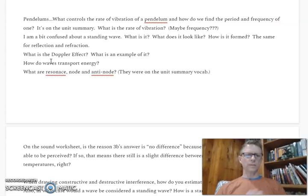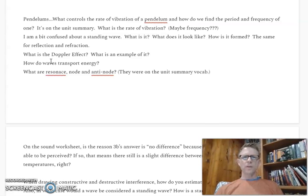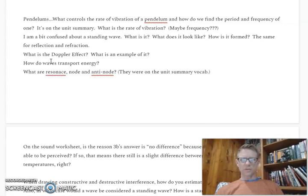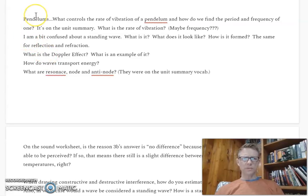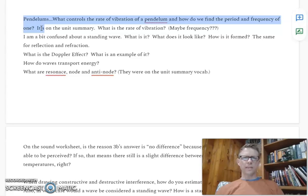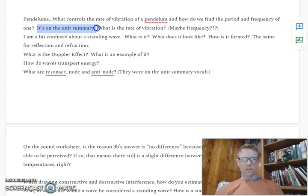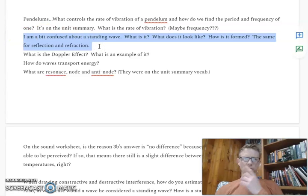Most of this stuff about pendulums you don't have to worry about. That's just an example of a simple harmonic oscillator. I'm seeing this says it's on the unit summary, but I thought I greyed that out. We're kind of adjusting to a new MCAS this year and still making decisions based on really scant and sparse information from the state about what to include.